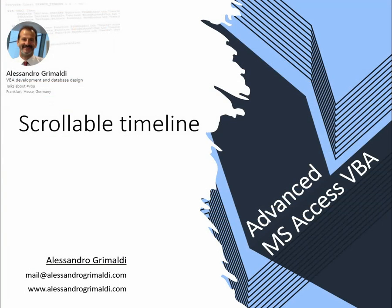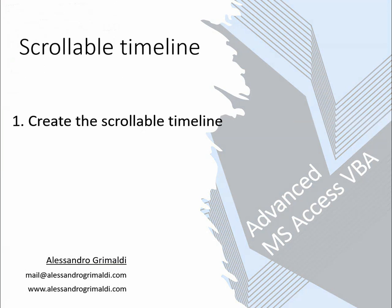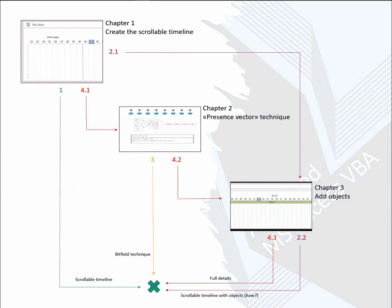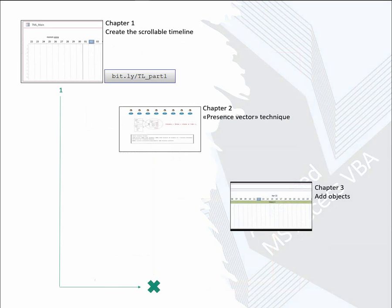I decided to split this long workshop into three chapters. In the first we'll draw the scrollable timeline — if you prefer you can decide to stop here and you will have an object you can easily embed and use in your projects. In the second chapter we'll talk about the presence vector, often called bit field, a technique I really like which can be applied to a wide range of problems. This chapter will be somehow independent from the timeline, so you are free to watch it regardless of the other two. But it will lay down the foundation for the third and last part, in which we'll use this technique to place objects on the timeline we built in the first chapter.